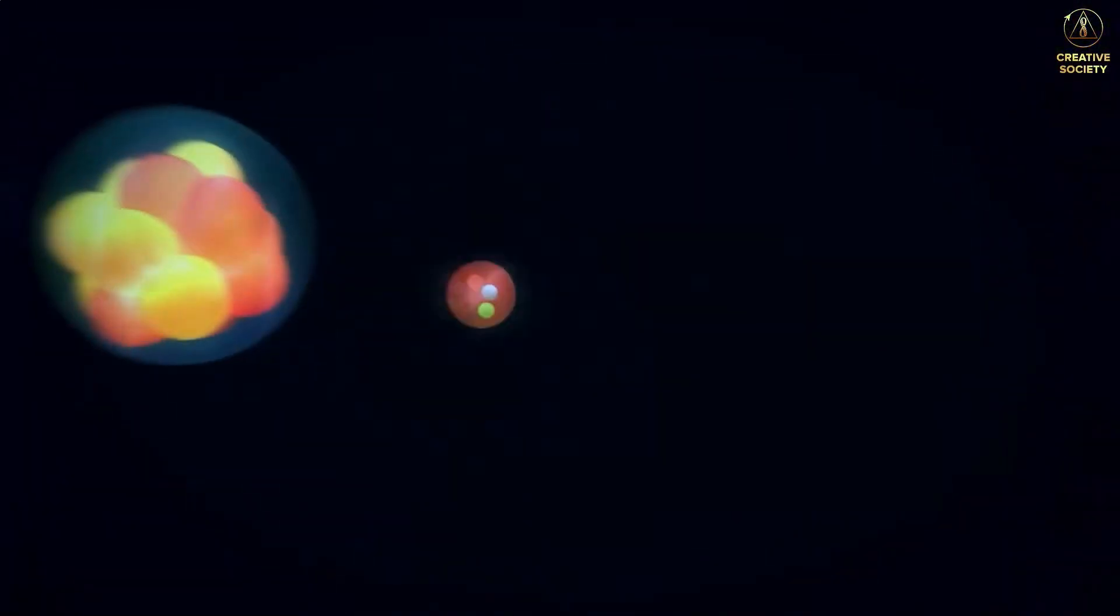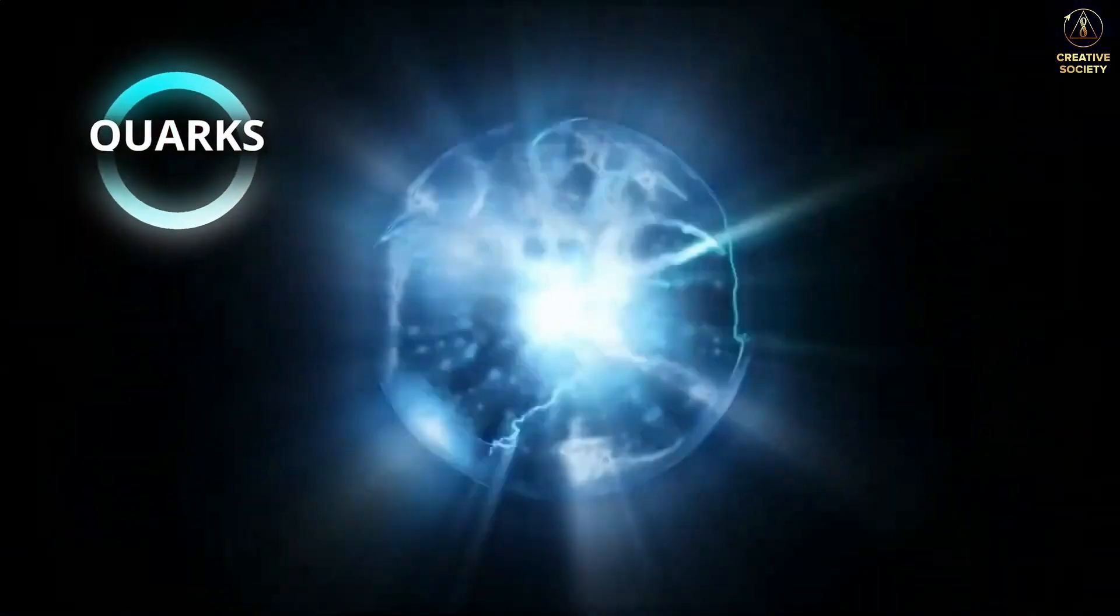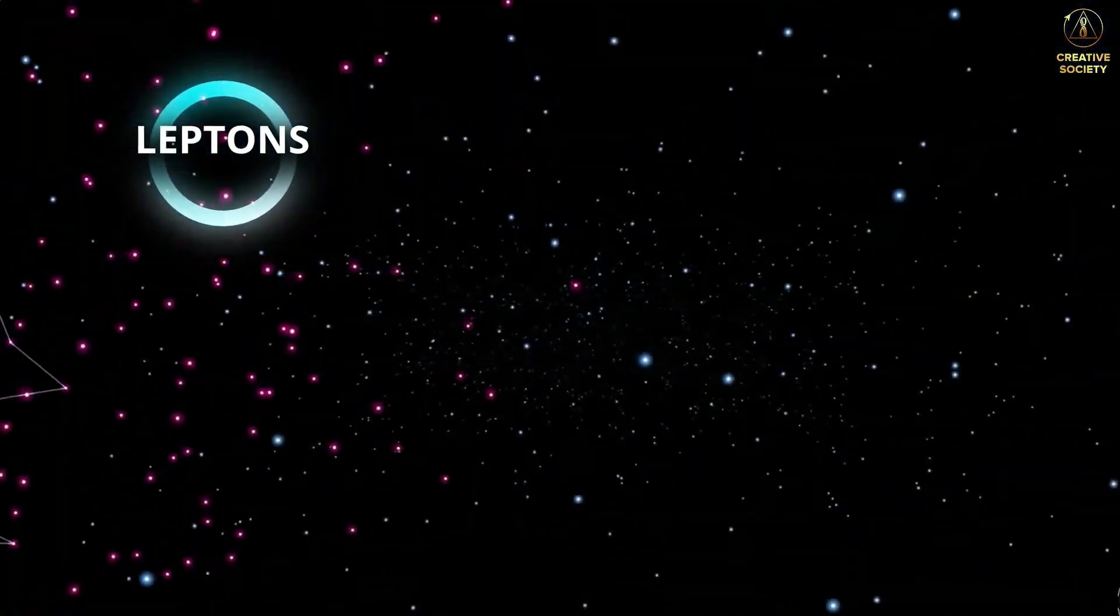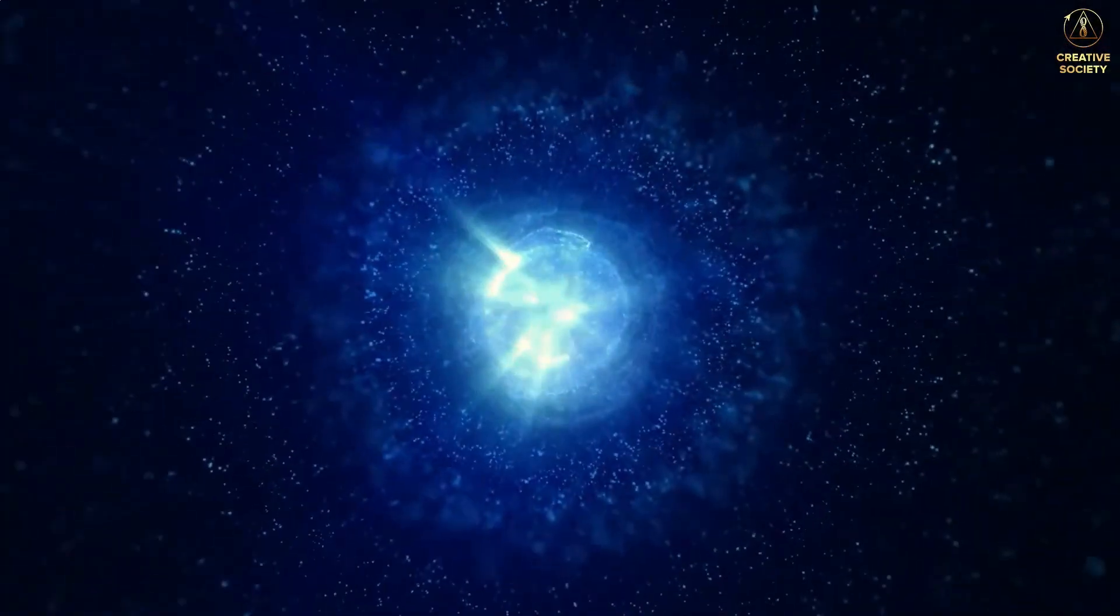Modern science knows that all substances consist of molecules and atoms. Atomic nuclei are formed from protons and neutrons, which consist of quarks. It is generally believed that quarks are the smallest particles, along with leptons, electrons and neutrinos, and they are structureless.